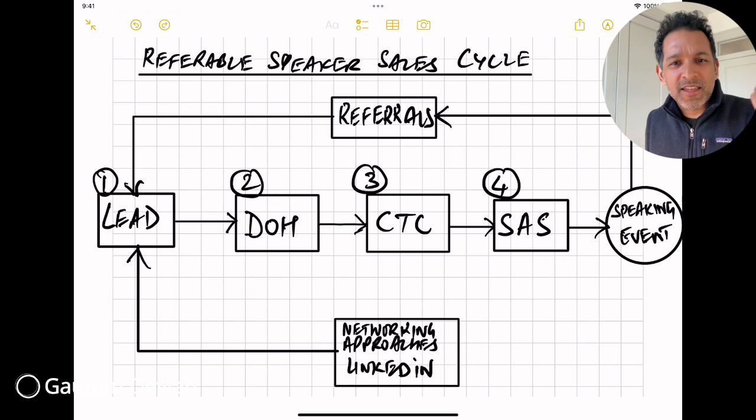There's a tangible yes or no you can answer at each stage in the process. Now to make this process a cycle, the way I thought of it was that the fourth step should logically culminate in, when we successfully close the sale, it should culminate in a speaking event.